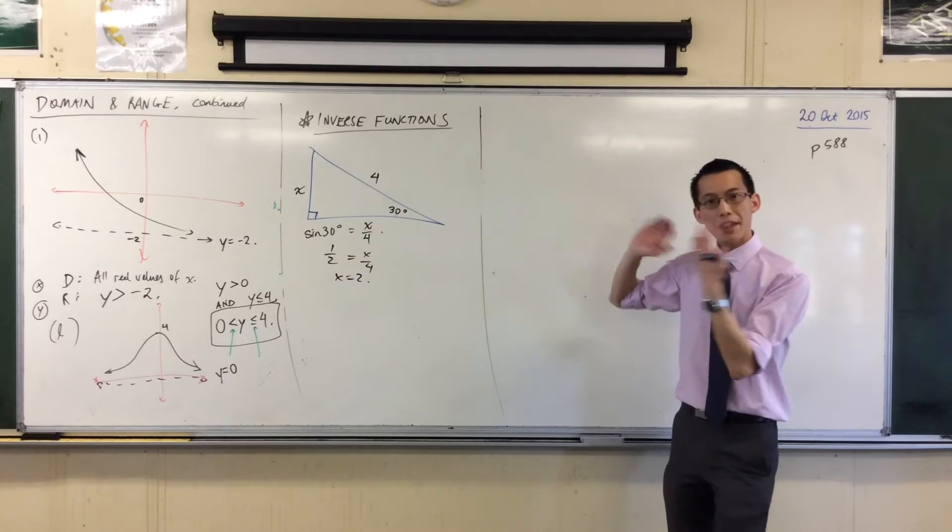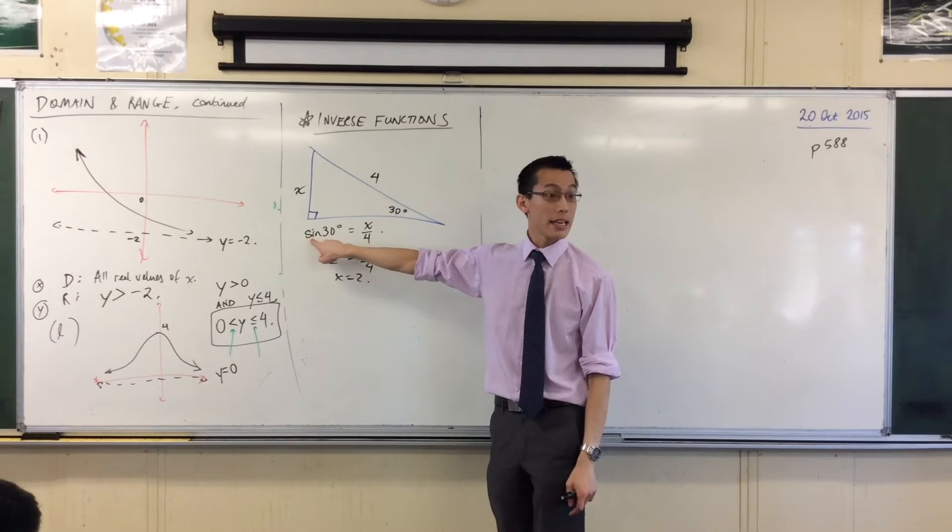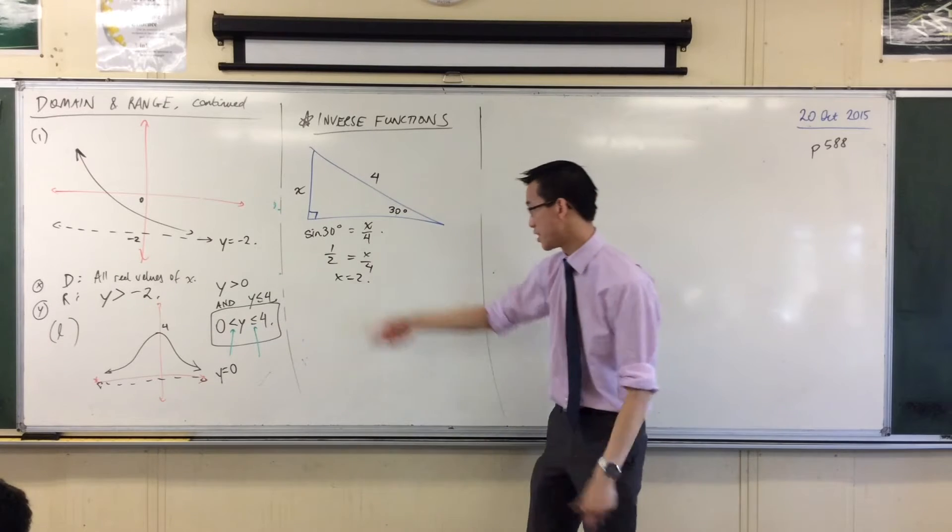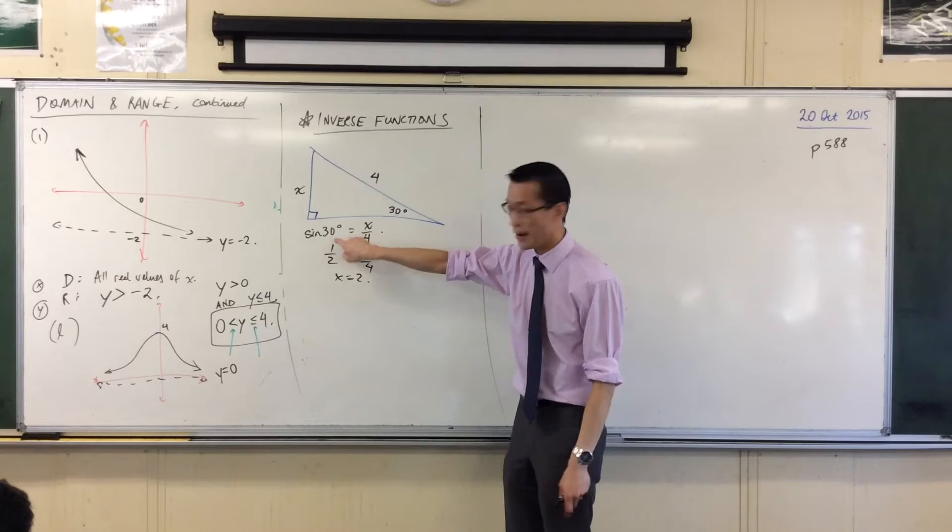Now, this is using, this language here, is using a function. Sine is a function, right? You can put an input in, and you'll get an output. You put in 30 degrees, you get a half. Input, output.